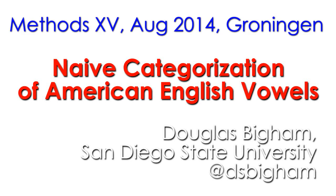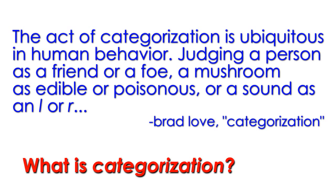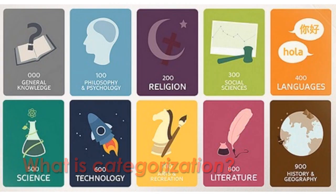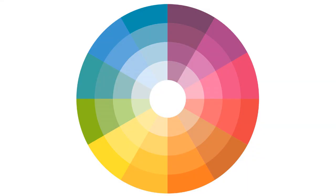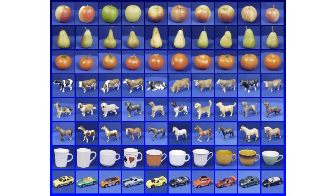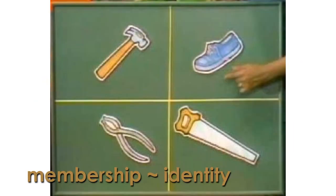Hello everyone. Today I would like to talk to you about categorization, specifically categorization as it applies to vowel sounds. So what is categorization? Categorization is a ubiquitous aspect of how human beings think. Humans like to carve up the world into discrete categories, and we form these categories by our experiences, specifically by our real-world interactions with potential members that we might then put into different categories. We look for similarities and differences among things.